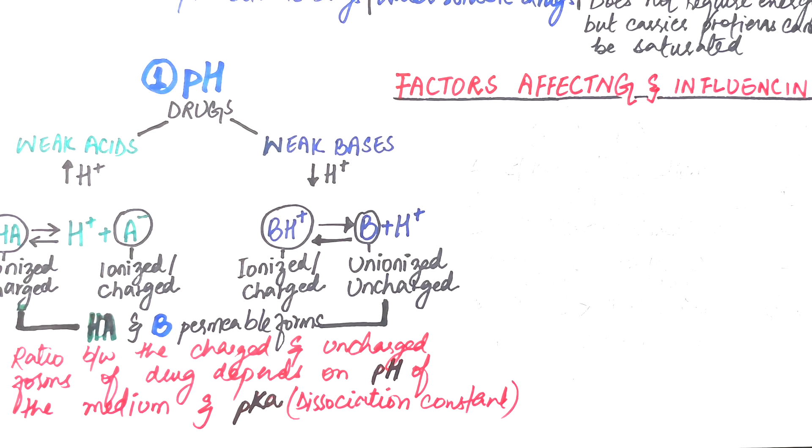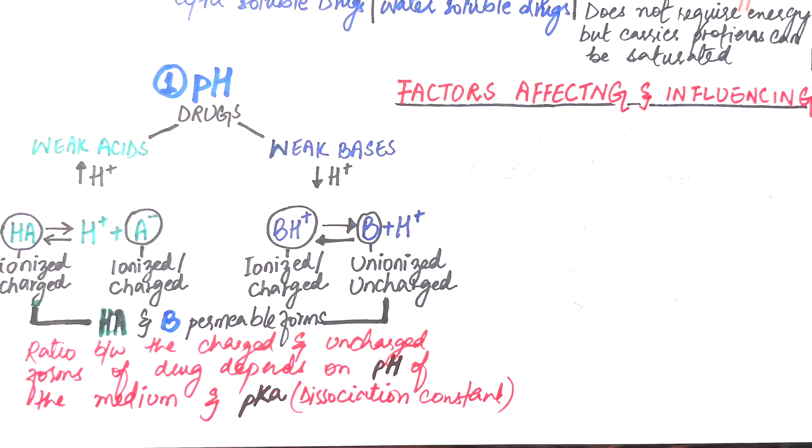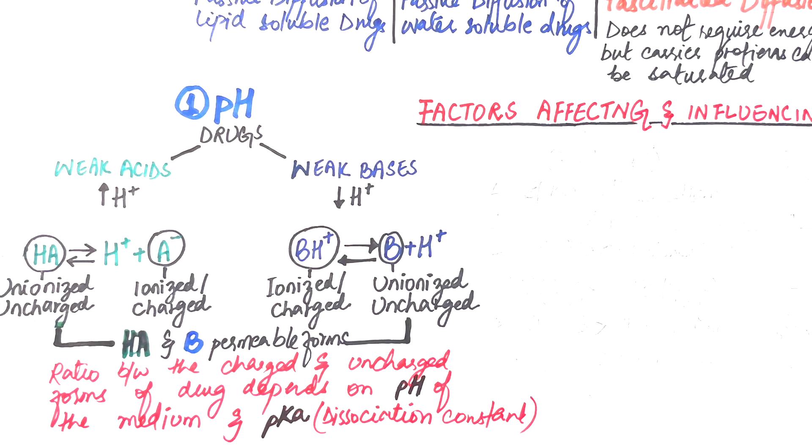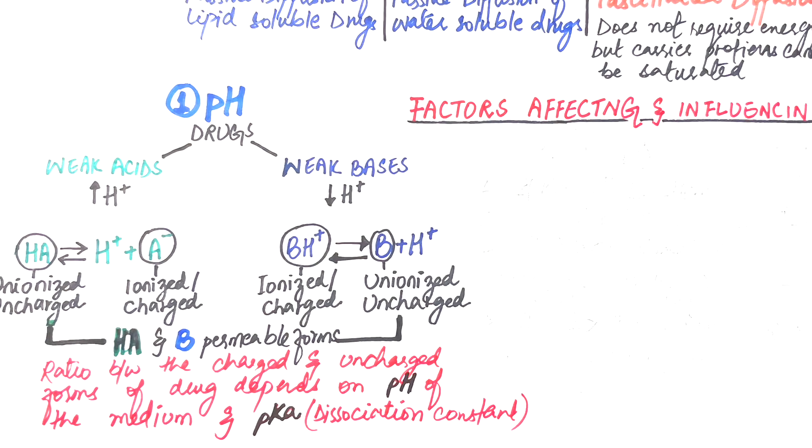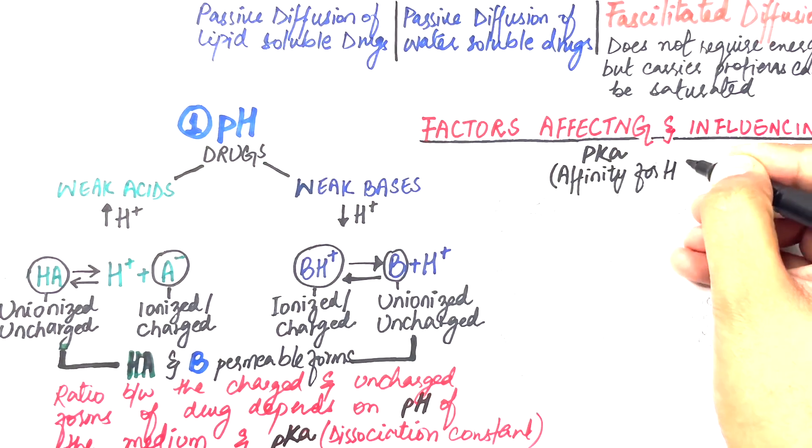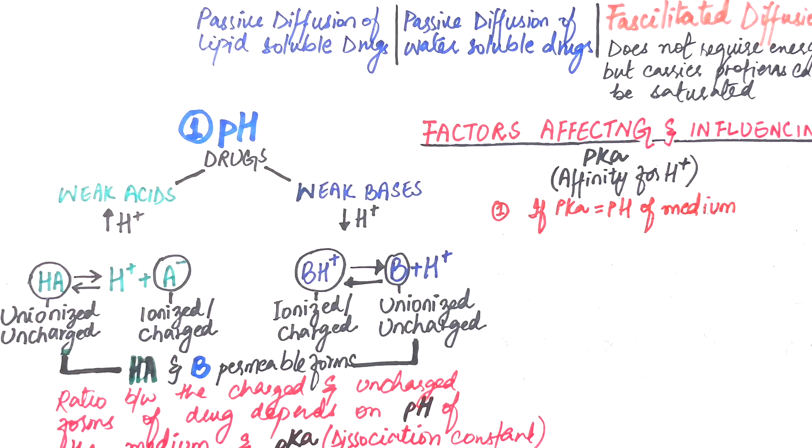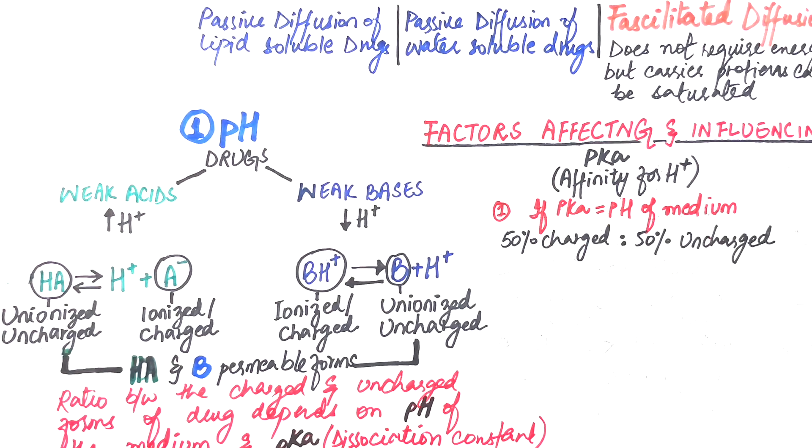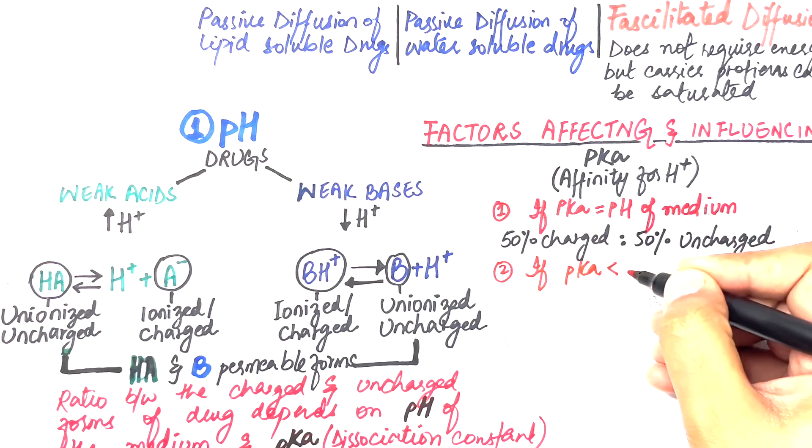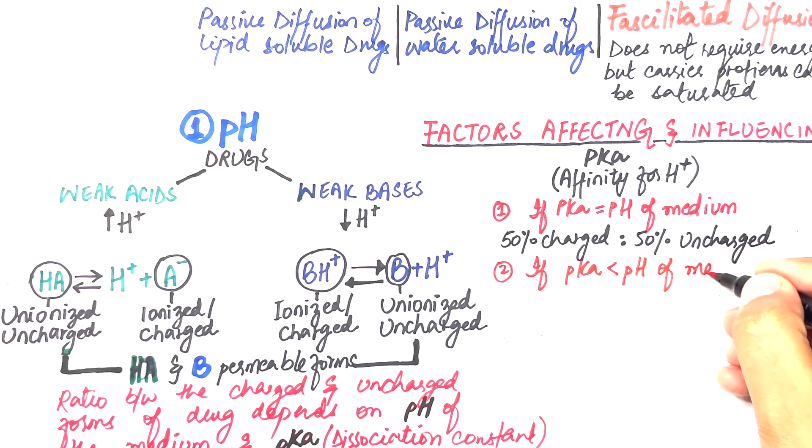pKa is defined as the affinity for hydrogen. The more the pKa value of a drug, the more will be the affinity for hydrogen and the more of the protonated forms of either drugs will be formed. If the pKa value of drug is around the pH value of the medium then 50% of the drug will remain in its charged form and 50% in its uncharged form. If the pKa of the drug is lower than the pH of the medium, the deprotonated form for an acidic drug and the free base form for a basic drug will predominate.